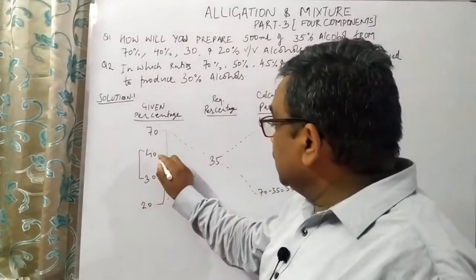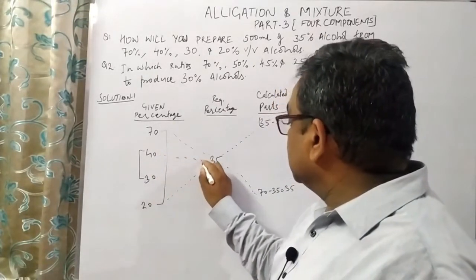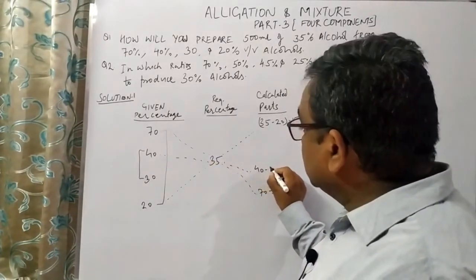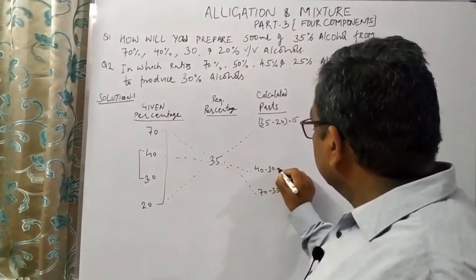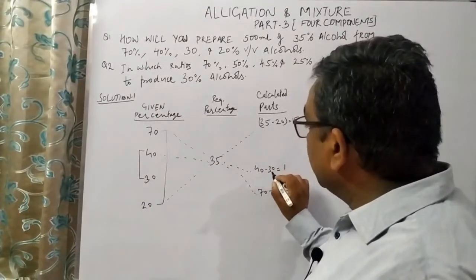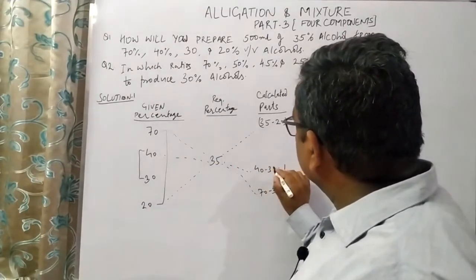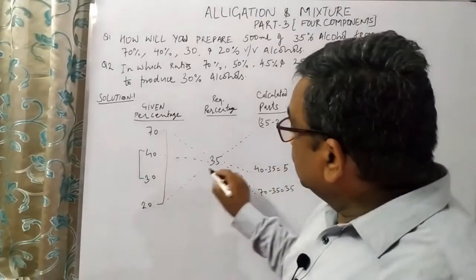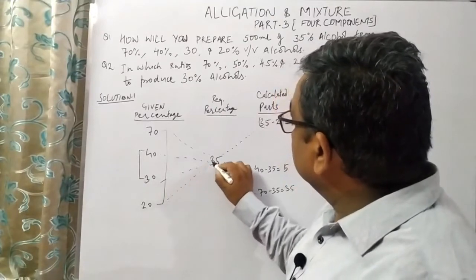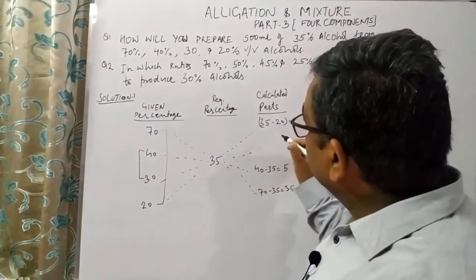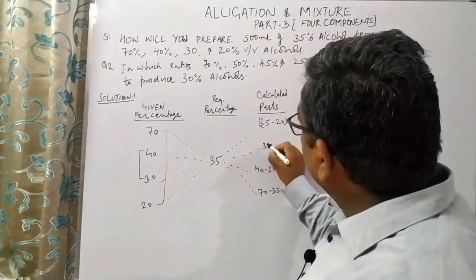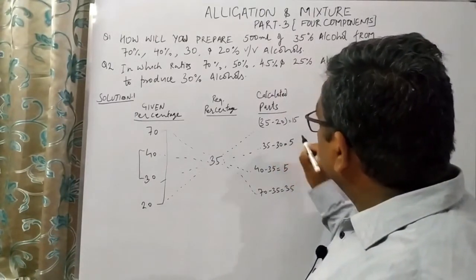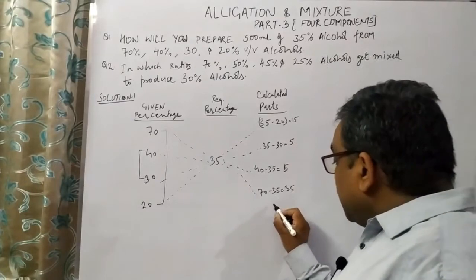The next combination is 40 and 30: 40 minus 35 is equal to 5 parts. And 35 minus 30 is equal to 5 parts.